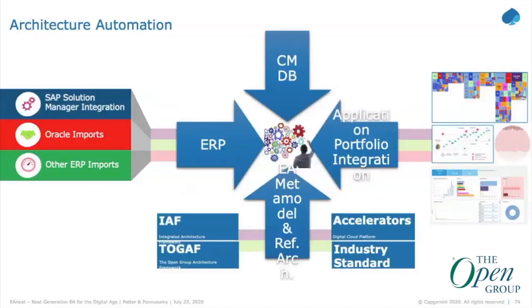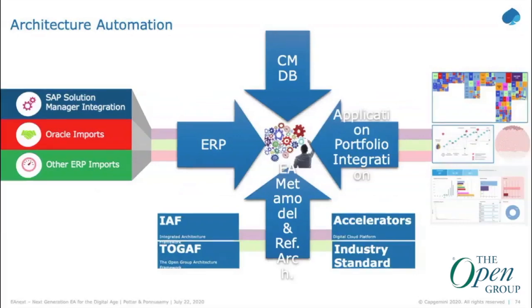As part of EA Next, I'd like to take you through the automation options available and how to get started on the EA Next journey. Architecture automation is about automating architecture activities such as current state architecture assessment at the application and technology architecture level, and the meta-model and standards.